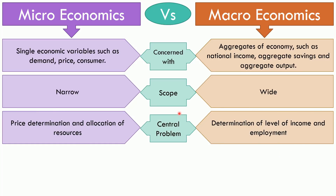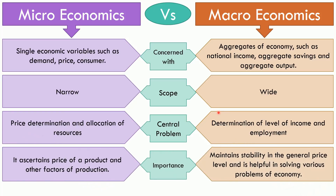Microeconomics helps in coping with central economic problems such as price determination and allocation of resources. On the other hand, macroeconomics helps in determining the level of income and employment. When it comes to importance, microeconomics ascertains the price of a product and other factors of production. Conversely, macroeconomics helps in maintaining stability in the general price level and resolves major economic problems such as inflation, deflation, reflation, unemployment and poverty as a whole.